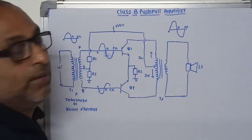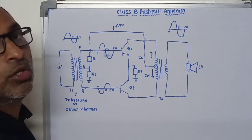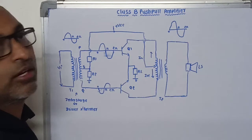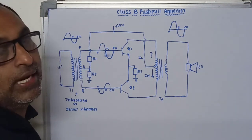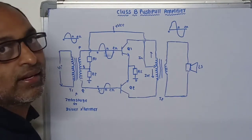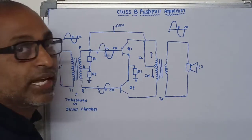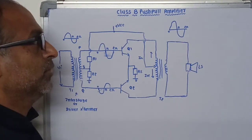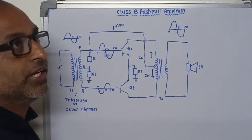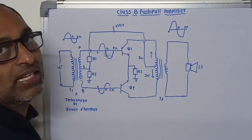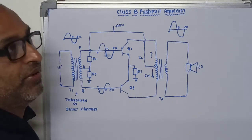Push-pull amplifier. In a push-pull amplifier, two power transistors are used and both are the same — meaning they may be NPN type or PNP type. Push-pull power amplifier is used in Class A type, Class B type, and Class AB type amplifier.